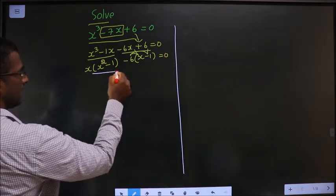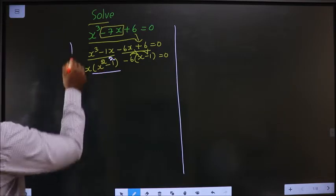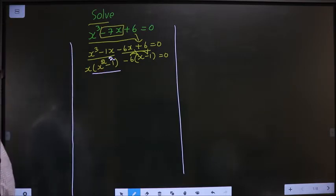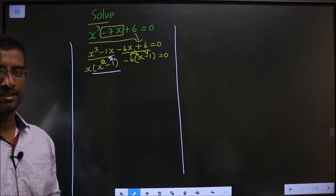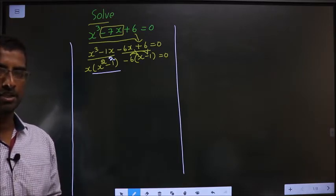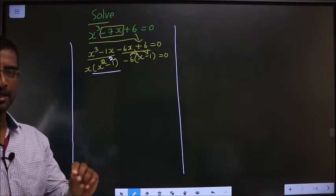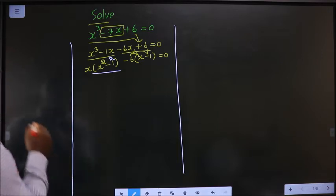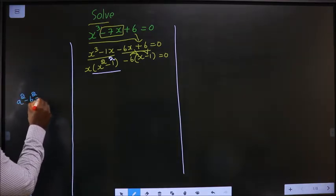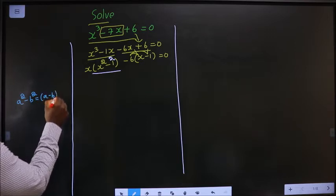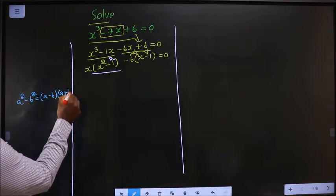Next. To simplify this I will put a square on 1. Even if I put a square on 1 it is not going to change anything. Now why did I put a square on 1? Such that I can make use of this formula: A square minus B square is equal to A minus B times A plus B.